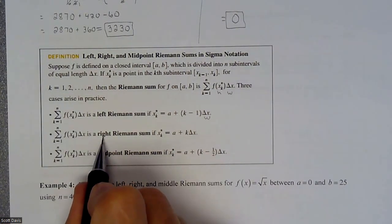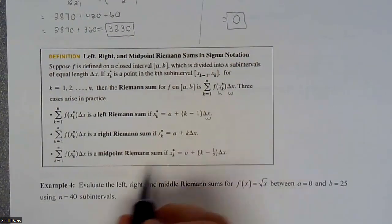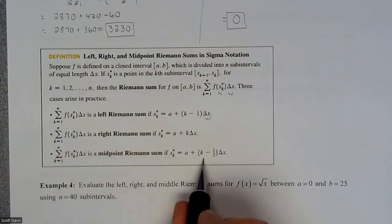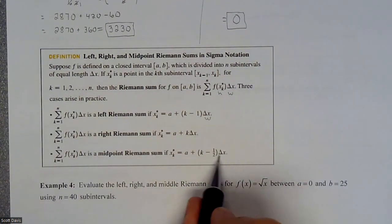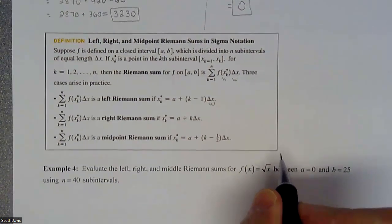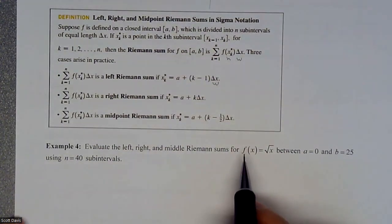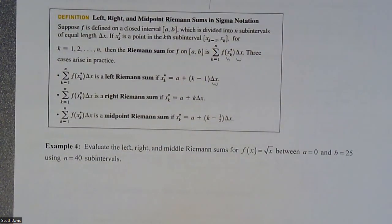If you're doing a right Riemann sum, then the formula looks like this. If you're doing a midpoint Riemann sum, then it looks like this. We're going to use all of this to figure out what all our summations are.